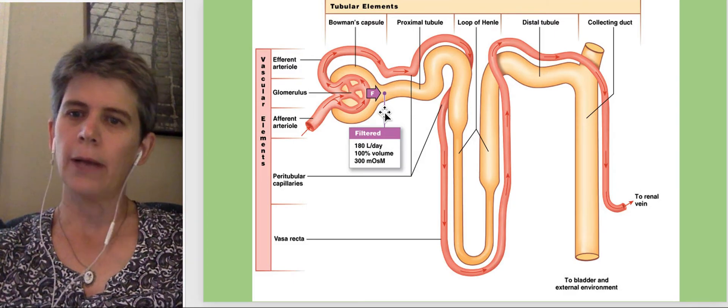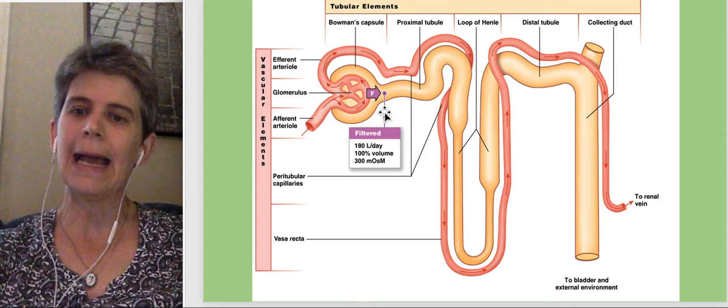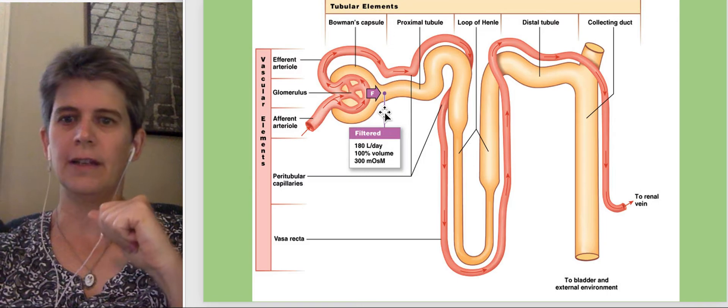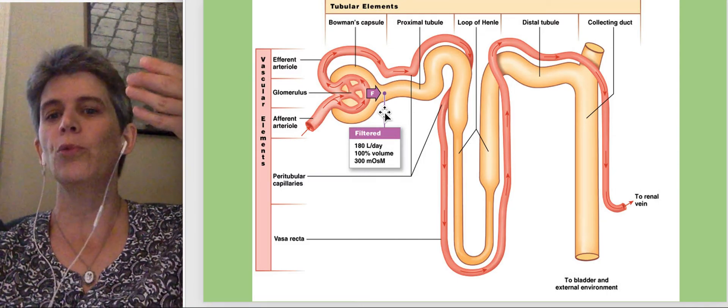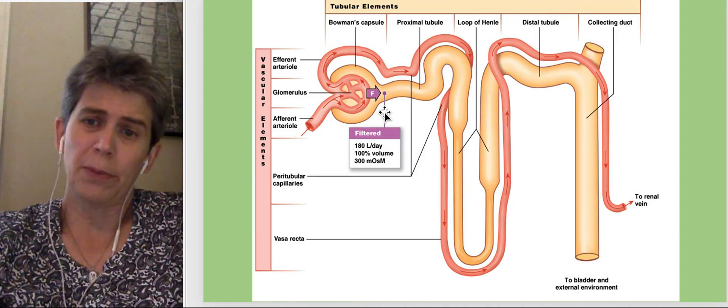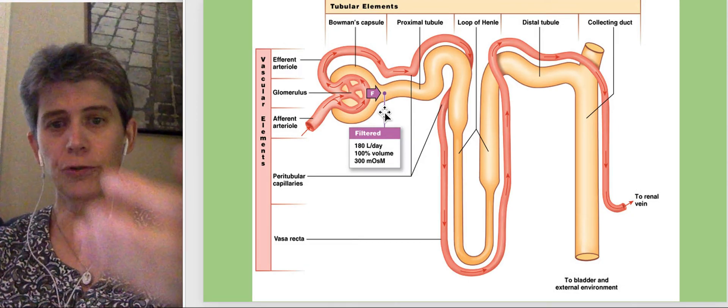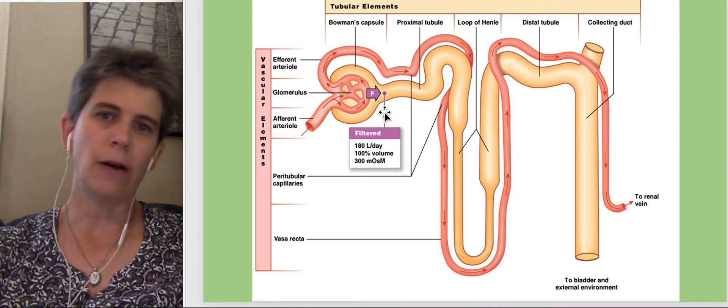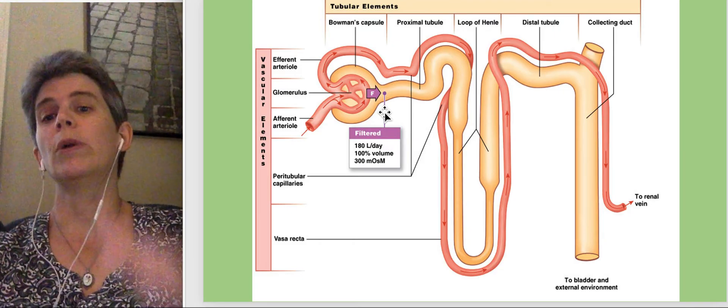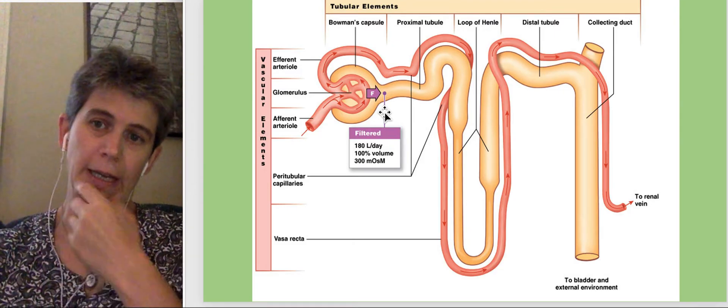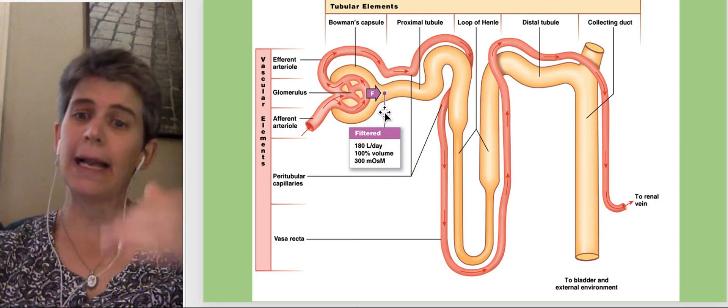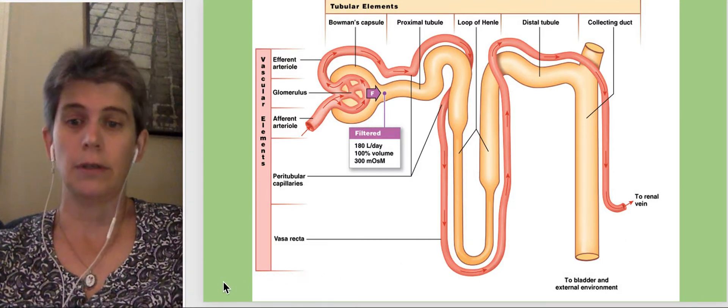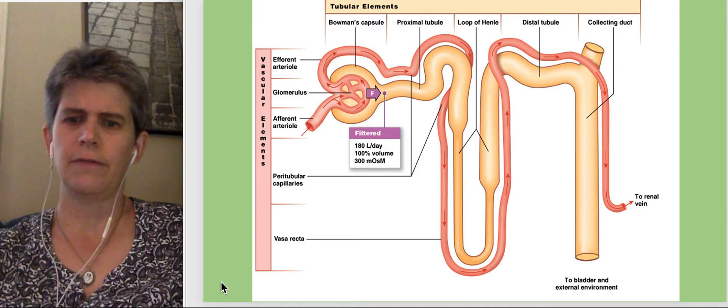So right away we can see that the major thing that has to happen inside that nephron or once we get that fluid inside the nephron is for the most of that fluid to return to the blood. Because with a blood volume of five or six liters and a filtration rate of 180 liters per day, you would immediately urinate out your blood volume if you did not reabsorb most of what was in that nephron tubule back into your blood before it got to the end of the nephron, at which point it becomes urine. So how does this work, this filtration?